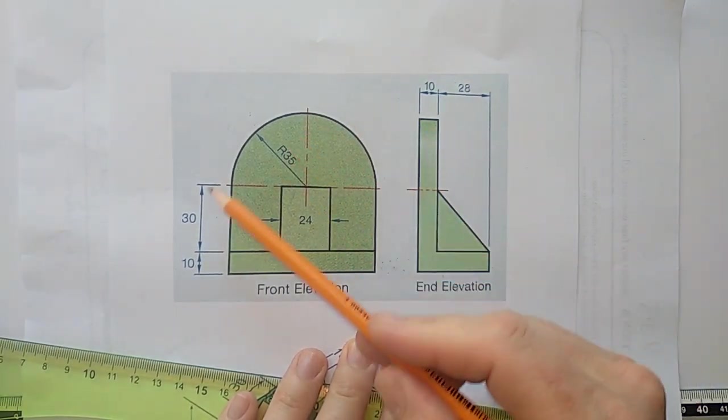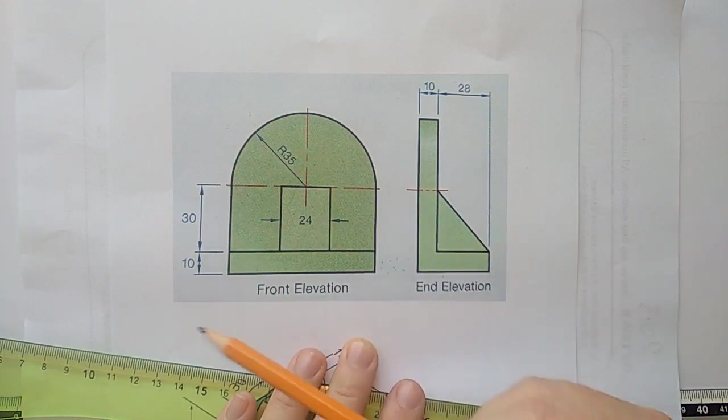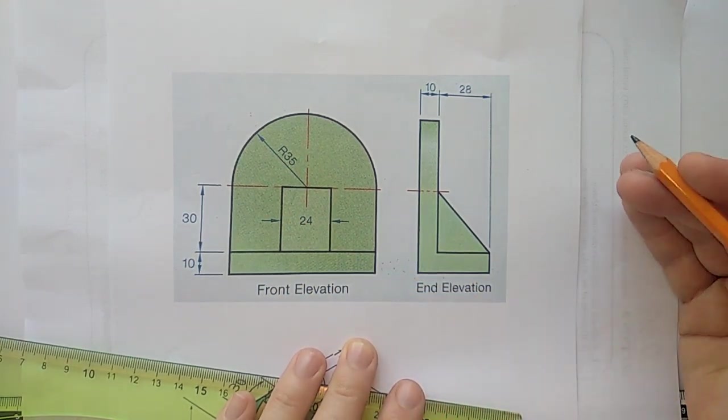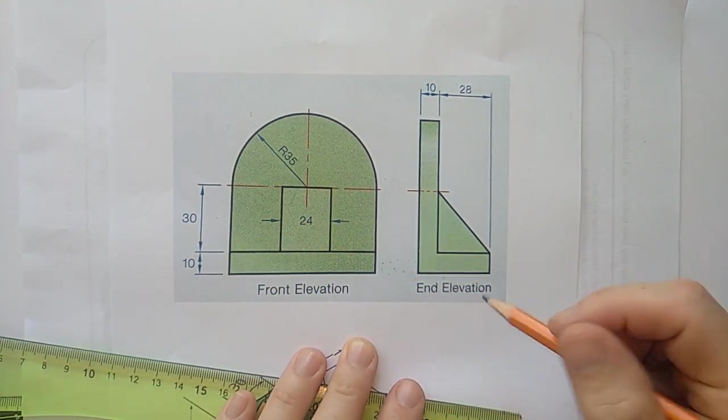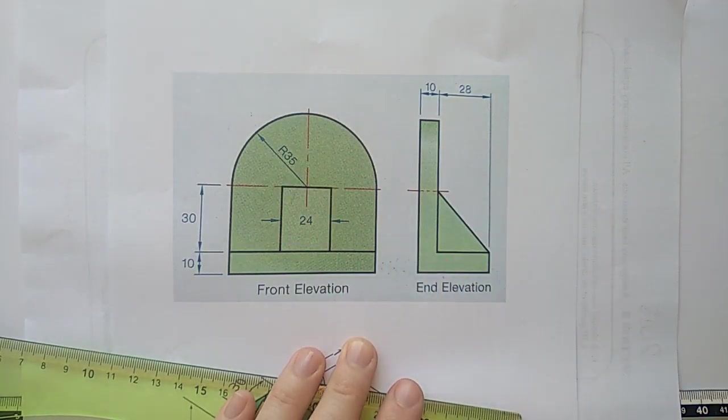Here we're going to try and draw an isometric of this object here. Now for the moment I'm going to draw this without a scale as this is just an introductory isometric drawing, but we will have to use a tricky bit of getting the curves right.